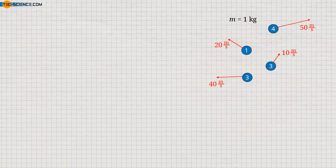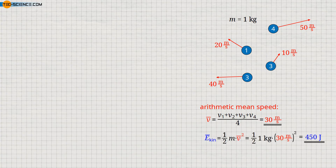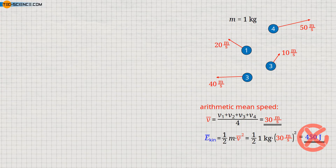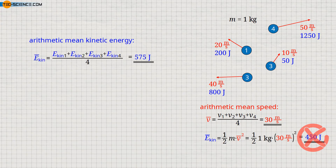Here is a simple example with four balls, each with a mass of one kilogram. The speeds are 10, 20, 40, and 50 meters per second. If we sum up these speeds and divide by the number of balls, we get a mean speed of 30 meters per second, giving a kinetic energy of 450 joules. However, this does not correspond to the actual mean kinetic energy. Determining the kinetic energy for each ball gives 200, 800, 50, and 1250 joules respectively. Adding these up and dividing by four gives a mean kinetic energy of 575 joules — not 450 joules. This shows that to determine the mean kinetic energy we must not use the mean speed, but must average the kinetic energies.